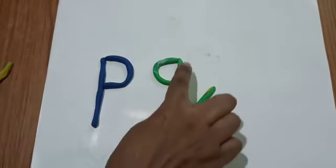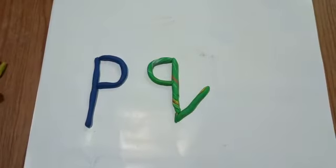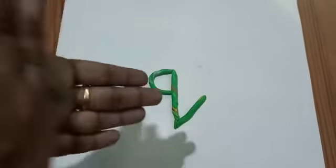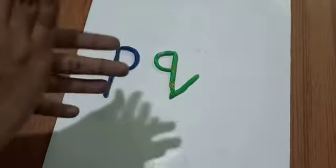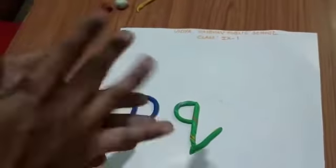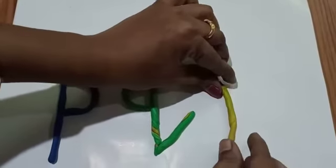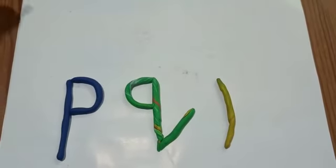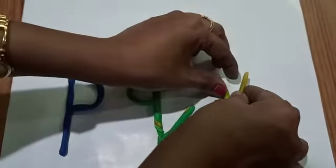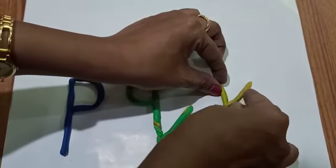P, Q, now R. I am taking some more clay. R is very easy, children. One small slanting, again another slanting like this.